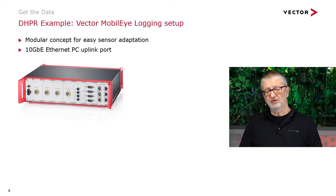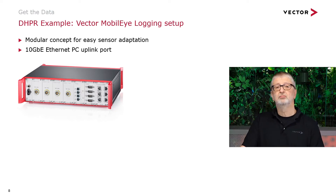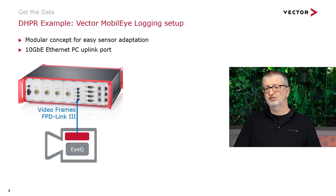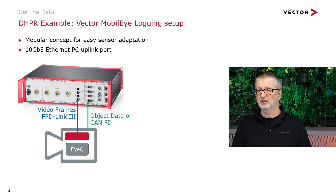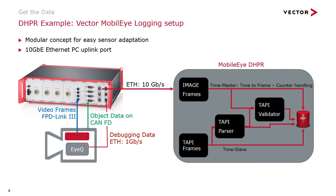I want to explain the DHPR in more detail using the example of a MobileEye logging setup. The camera system has multiple interfaces: an FPD-Link for video frames, a CAN FD interface for detected objects, and an Ethernet interface for debugging data. The hardware combines everything and transmits it via Ethernet to the PC, where the DHPR analyzes it and stores the necessary data.